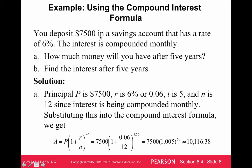Let's look at this example: you deposit $7,500 in a savings account that has a rate of 6%, compounded monthly. How much money will you have after five years? We plug this into the formula. The big thing is when doing the exponent — this 12 times 5 — if I don't put parentheses around it, the calculator could mess this up. So either put parentheses around your exponent or figure out what the exponent will be before you type it in.